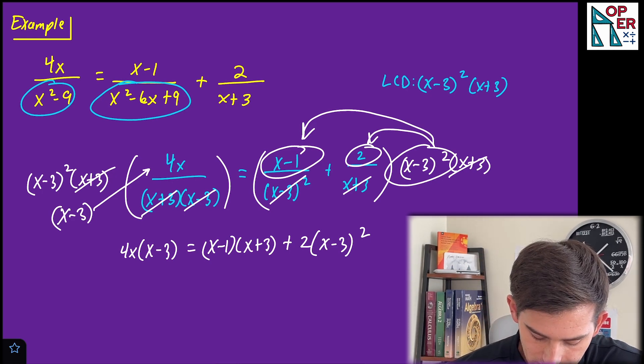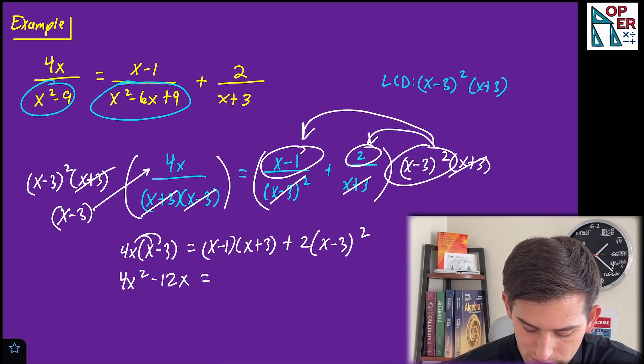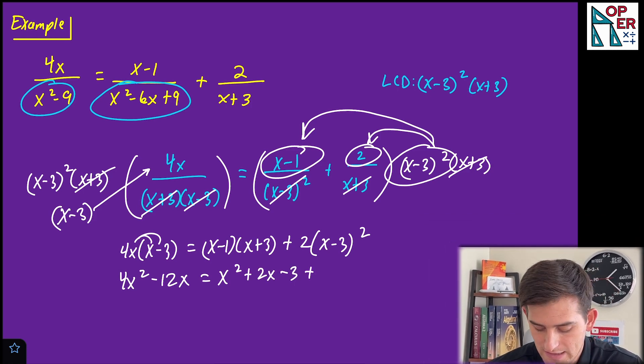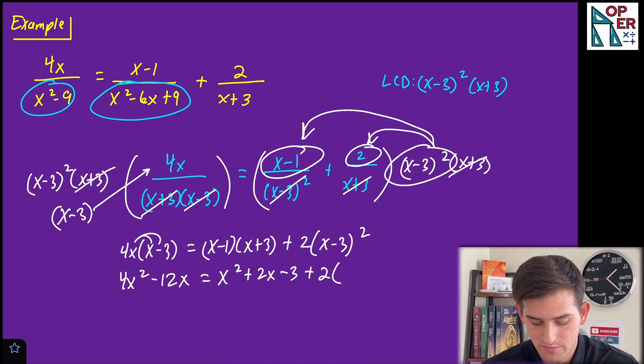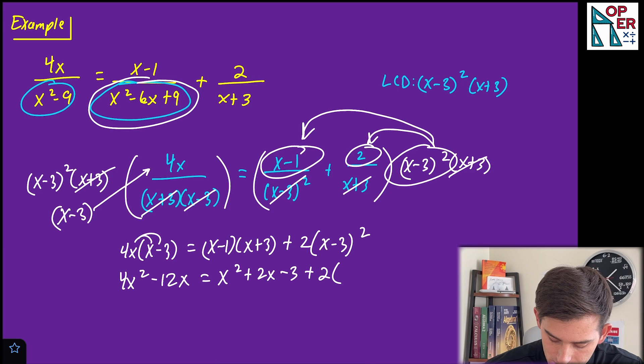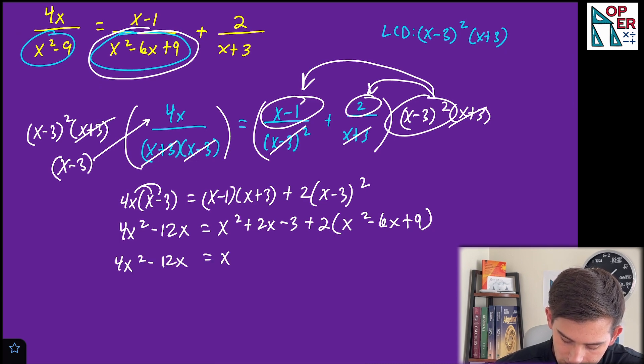So now let's go ahead and simplify. So four X squared minus 12X is equal to, now we can FOIL here, X squared plus two X minus three, and then plus, and this would be two times, and we know X minus three quantity squared is the trinomial that we saw at the beginning. So X squared minus six X plus nine. Okay, so now we have four X squared minus 12X on the left side. And let's go with X squared plus two X minus three.